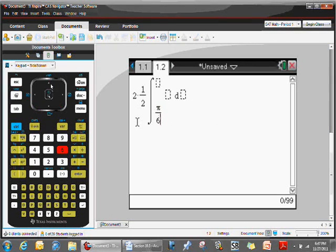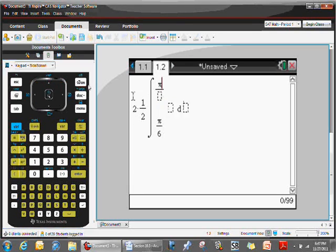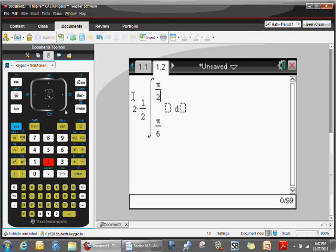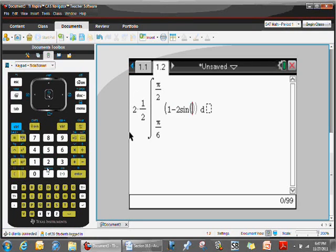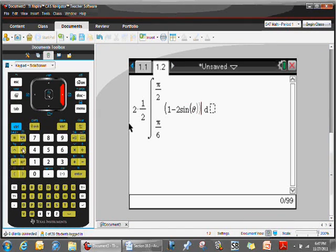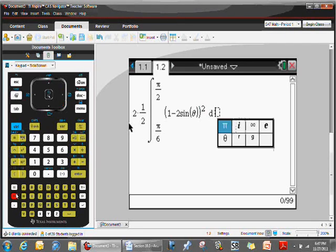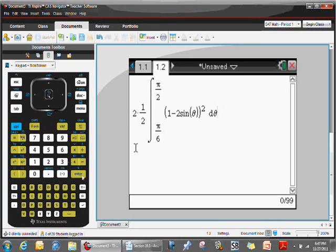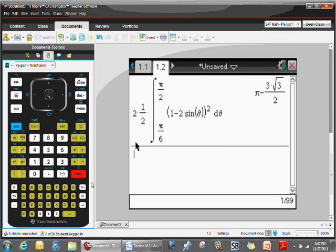Pi over 6 was our lower boundary. Upper boundary was a pi over 2. And we were integrating the quantity 1 minus 2 sine of theta, where it was all squared. And we did so with respect to theta. Check the answer out. It's always nice when it matches your analytic work. Pi minus 3 radical 3 over 2 is indeed the area of the inner loop of this limacon.